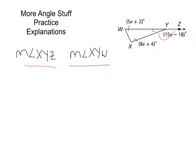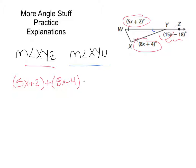I'm going to start out with the measure of angle XYZ. We can see here that we have a triangle with an exterior angle. By the exterior angle theorem, we know that the sum of the two interior angles is equivalent to that exterior angle. So to find the measure of angle XYZ, we just need to use some algebra. We know that 5x plus 2 plus the other angle 8x plus 4 is equivalent to that exterior angle, which is 15x minus 18.